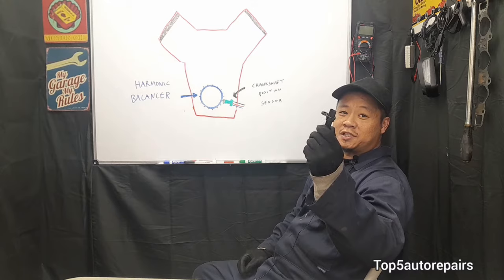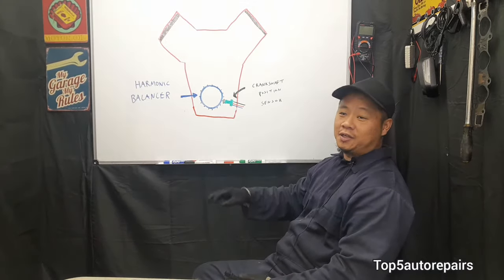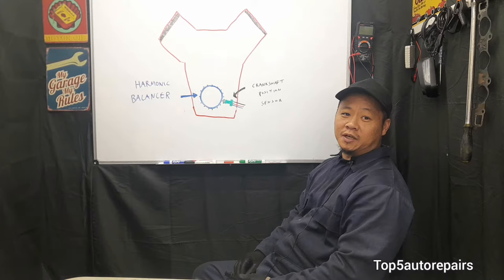The crankshaft position sensor is usually mounted near the harmonic balancer or somewhere around the bell housing.